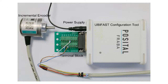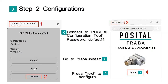Here is the real object. Power on the Ubifast configuration tool. Step 2: Configurations. Take out your mobile device and connect to the Positol configuration tool Wi-Fi option. The password is Ubifast14. Then go to flatbar.ubifast in your browser. Press next to configure.